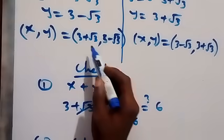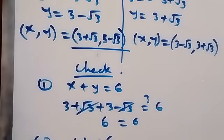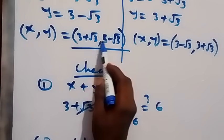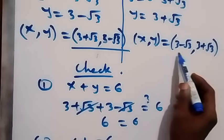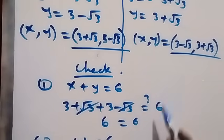Therefore the solution to this problem is (three plus root three, three minus root three) or (three minus root three, three plus root three). Thank you for watching — please subscribe, give a reaction, comment, share, and like. See you next class, and God bless you.